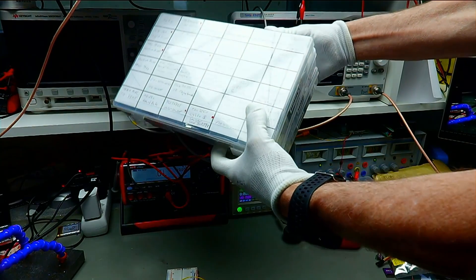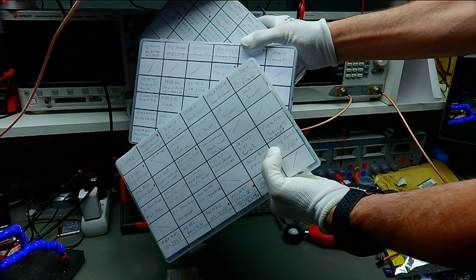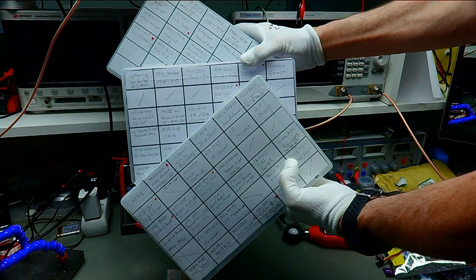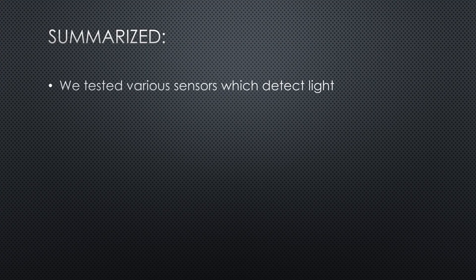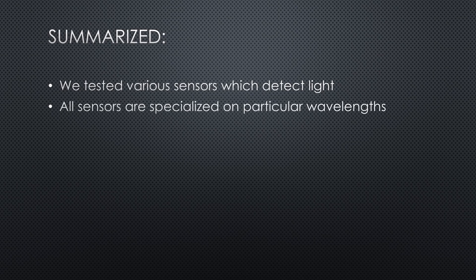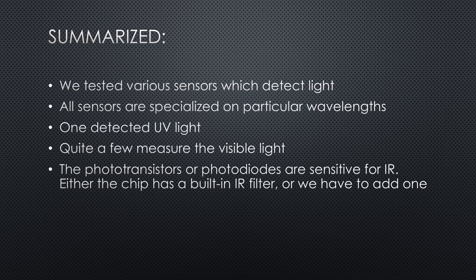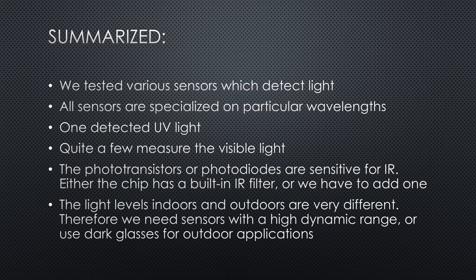These were the sensors I found in my boxes — I am sure there are many others available. Summarized: we tested various sensors which detect light, and all sensors are specialized on particular wavelengths. One detected UV light, quite a few measured visible light. Because photodiodes used on the chips are sensitive to infrared, either the chip has a built-in IR filter or we have to add one — otherwise we can get completely wrong readings. Because light levels are very different indoors and outdoors, we either need sensors with a high dynamic range or adapt them to the use case with dark glasses.